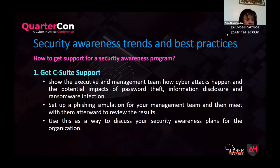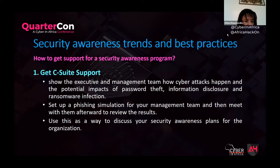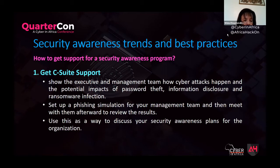Follow these tips on how to get support for your security awareness program. Get CISO support: security awareness training requires that employees are permitted to spend time on learning, and employees need to know it is a priority. You need CISO support, which translates to training budget, allocated time for employees, easy access to complete training modules, and setting the tone for why cyber security is essential. Show the executive and management team how cyber attacks happen and the potential impact of password theft, information disclosure, and ransomware. Set up efficient simulations for your management team, then meet with them afterwards to review the results and discuss your security awareness plan for the organization.